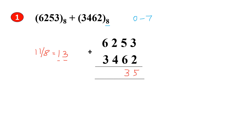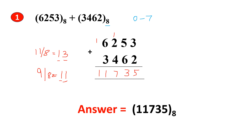Now add 1 plus 2 plus 4, which is 7. 7 lies between 0 to 7 so it is an octal number. Next, 6 plus 3 is 9. 9 does not lie between 0 to 7, so we divide 9 by 8: the quotient is 1 and the remainder is also 1. So 1 goes as the sum and 1 goes as the carry. The final answer for Problem 1 is 11735.